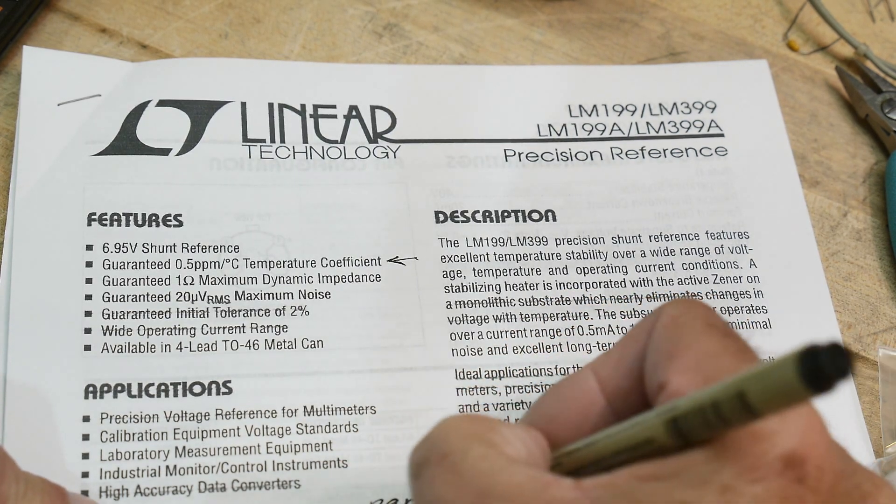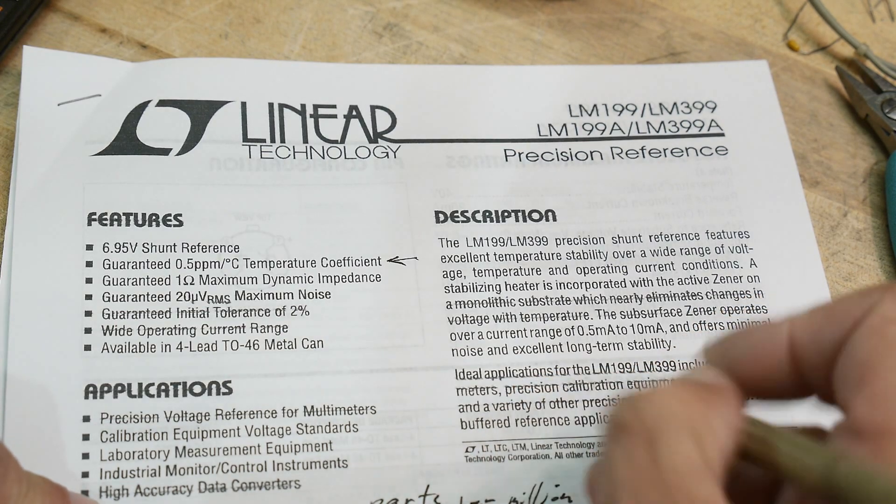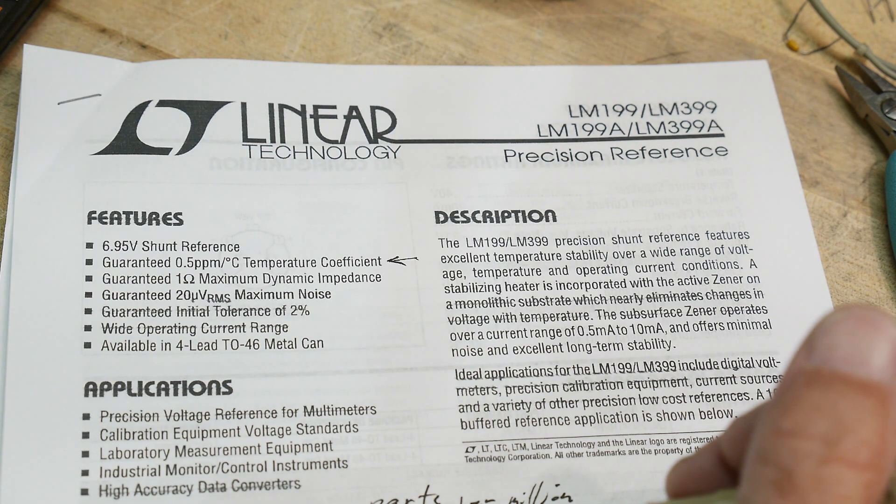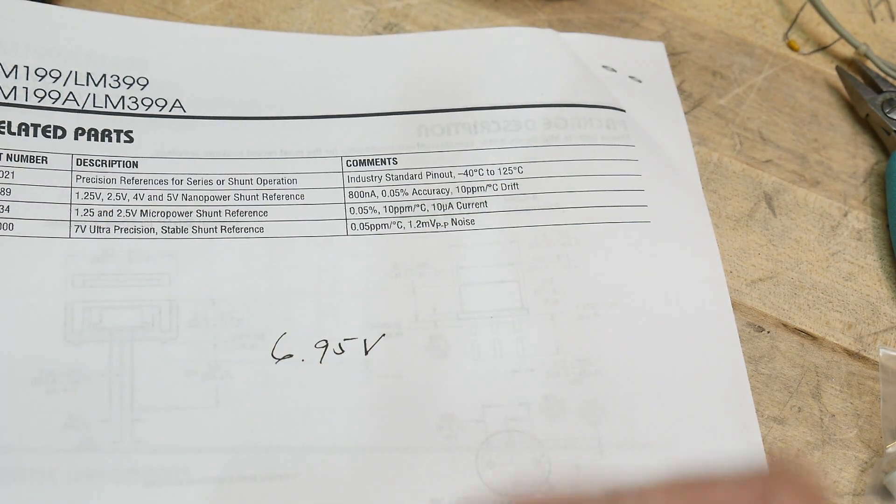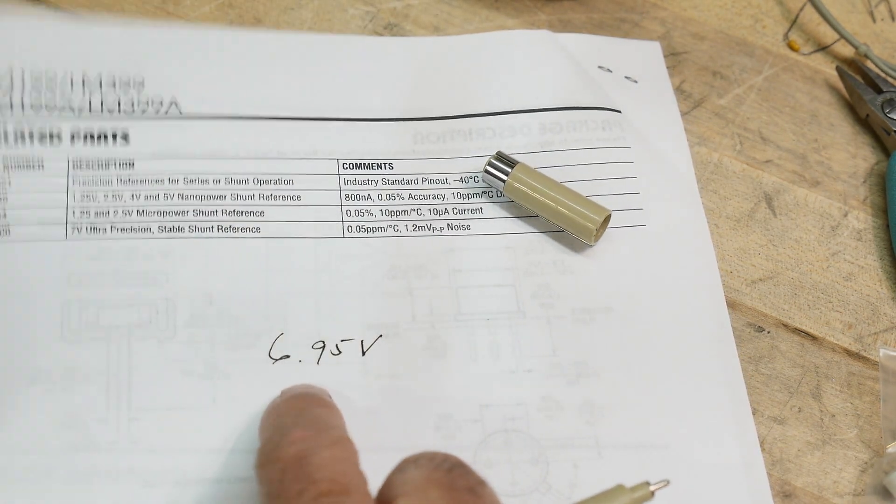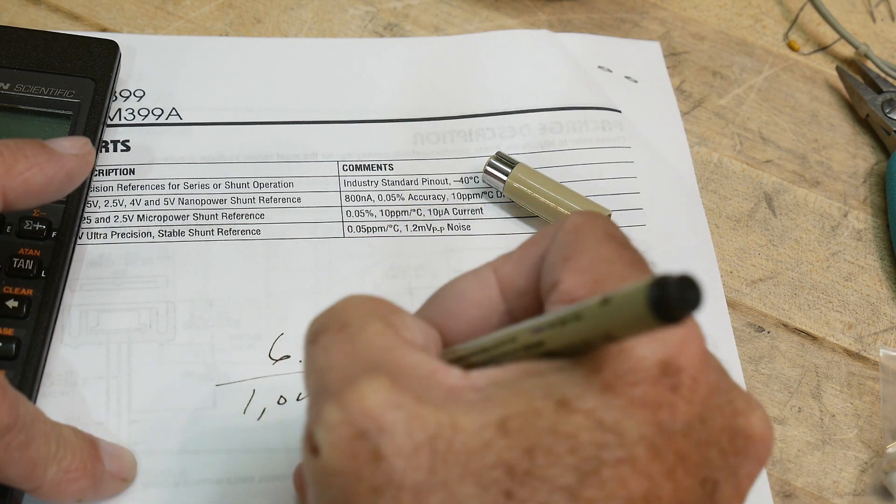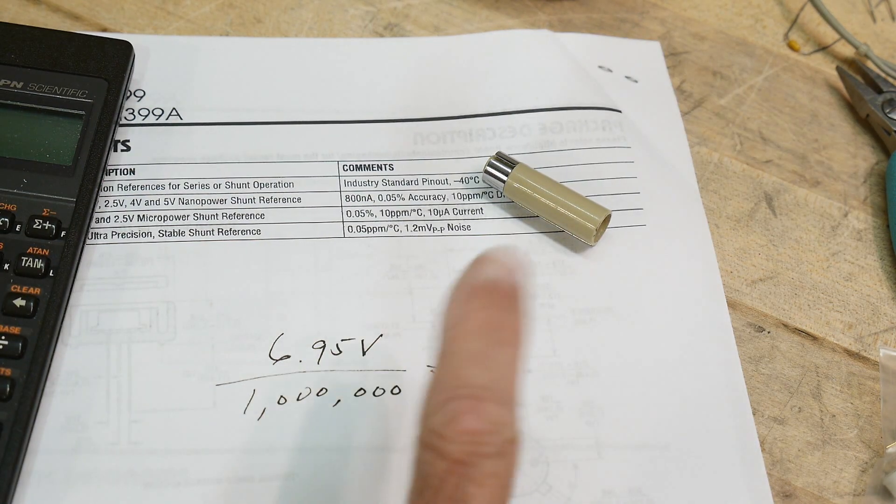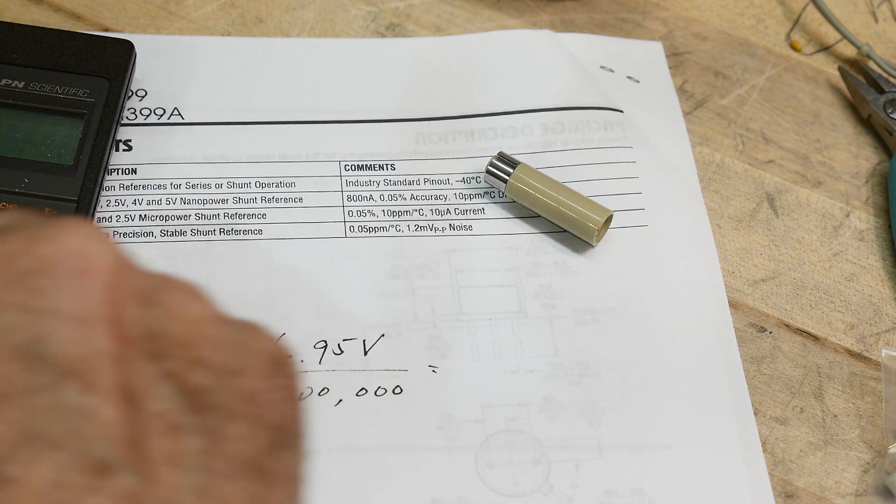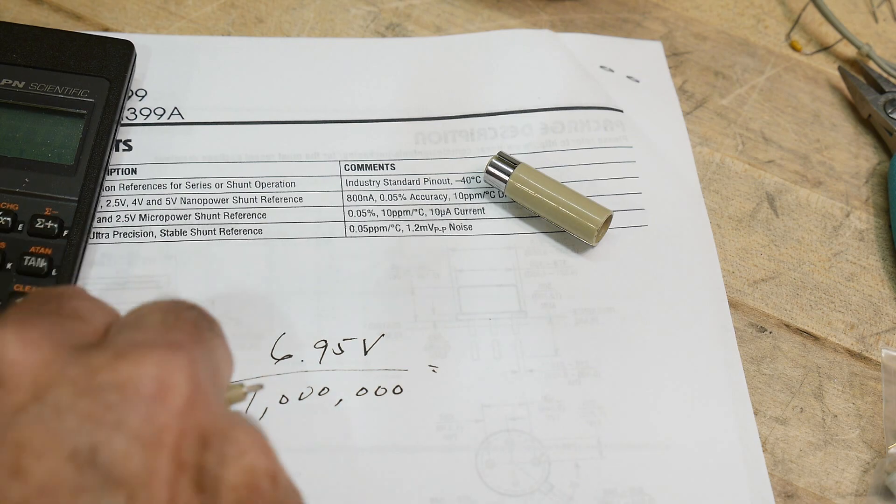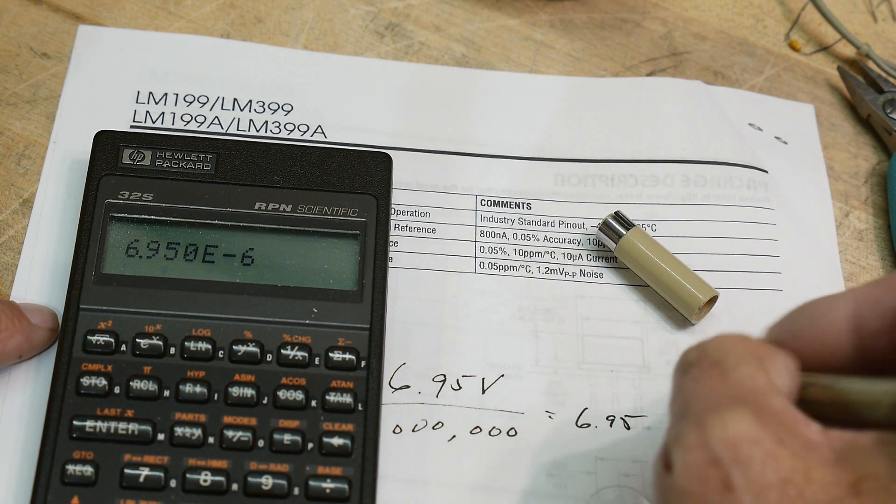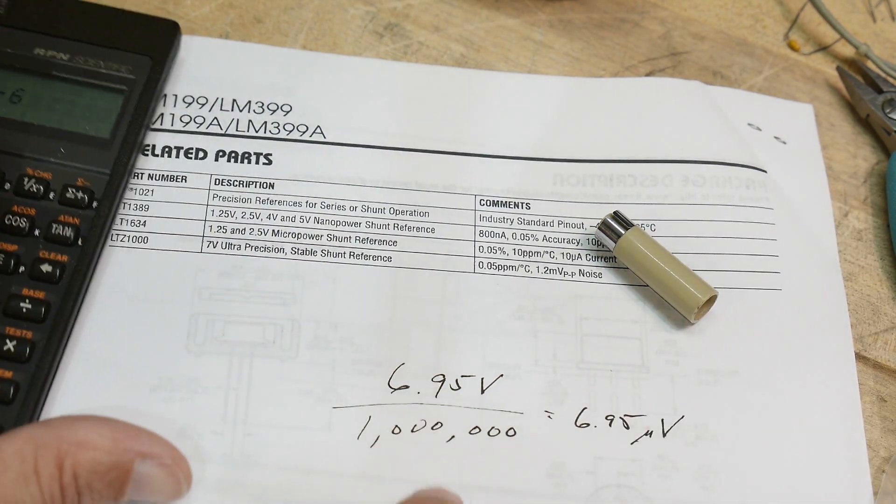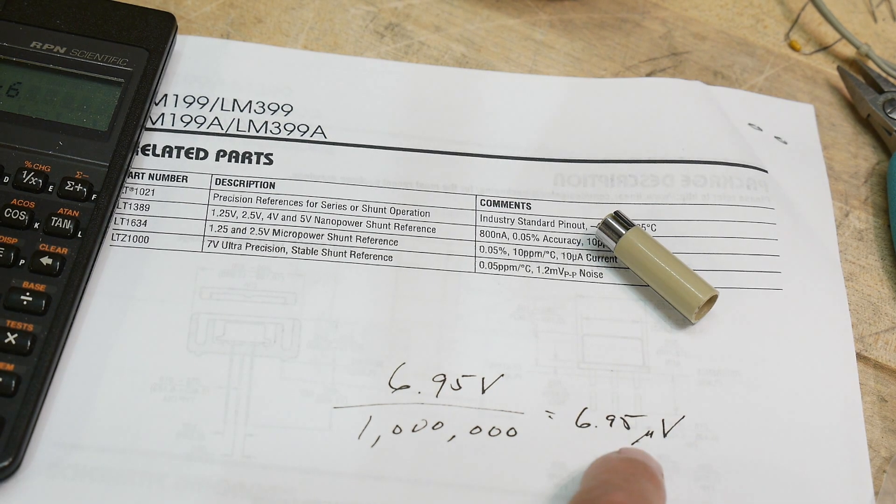How do you calculate parts per million? We're going to start with 6.95 volts. Parts per million means we need to know what one millionth of this is. We're going to divide it by one million. 6.95 divided by one million equals 6.95 microvolts. So one millionth of the zener diode voltage is 6.95 microvolts.